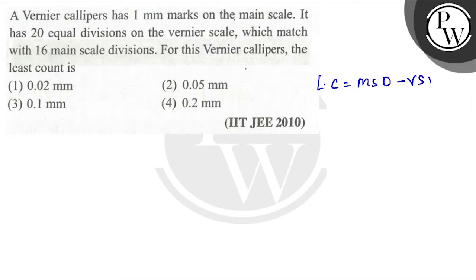Least count equals MSD minus VSD. 20 equal divisions of Vernier scale, so 20 VSD is coinciding with 16 of MSD.